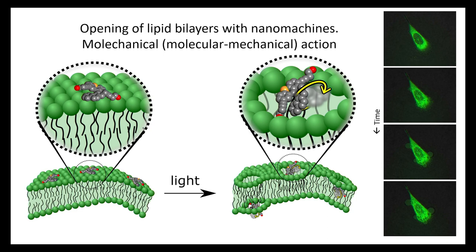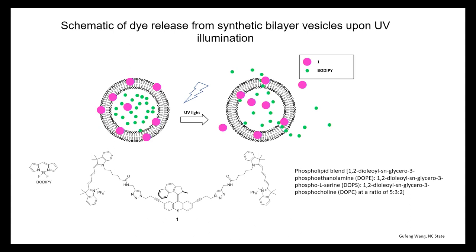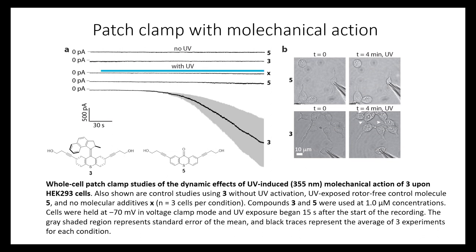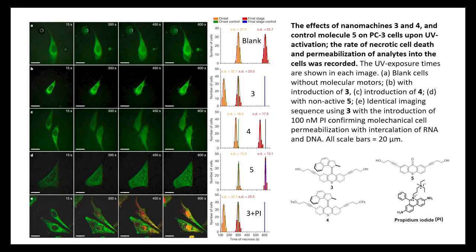When the motor is on the surface of a cell, you turn it on and it drills holes into the membrane. This throws off the proton gradients and can kill the cell, or you can use a small amount and have drugs follow in behind them. We studied this by building fluorescent probes on these molecules to watch them diffuse out of an artificial lipid bilayer, then used patch clamp — placing one probe inside the cell and one outside — to watch the current increase as holes open up and ions flow through.